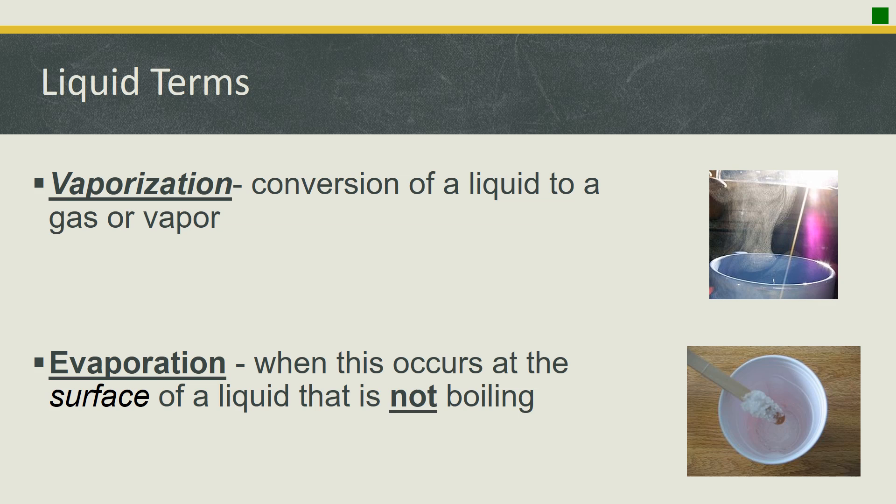Liquid terms: vaporization, evaporation, and boiling. Vaporization is any conversion between a liquid to a gas or vapor — it's the general term. Evaporation is specifically when it's occurring only at the surface and not boiling — literally peeling off the top layers of a liquid and converting them from liquid to gas, but not throughout the bulk of the liquid.